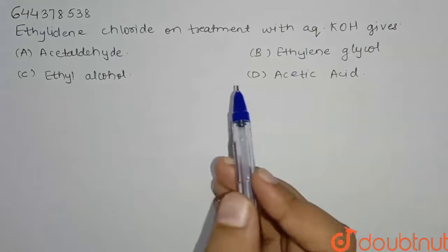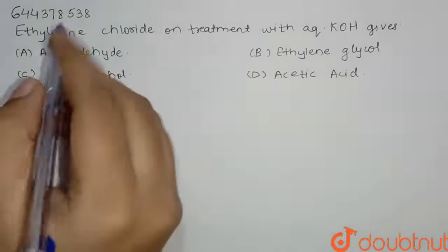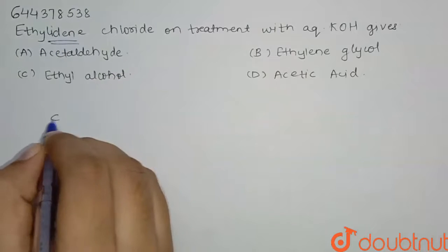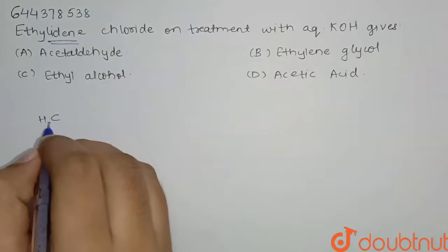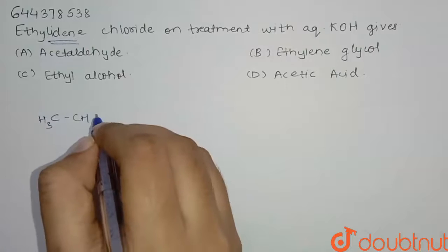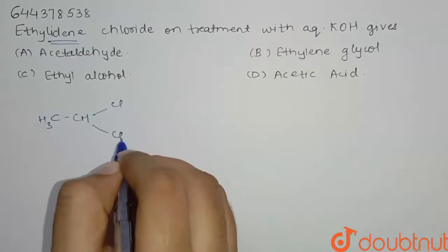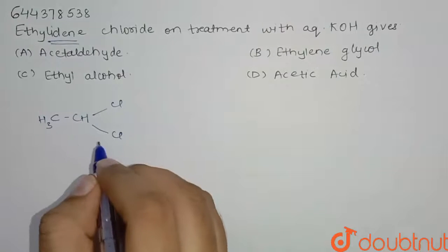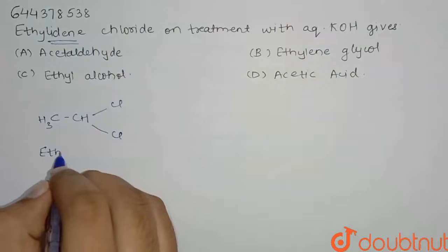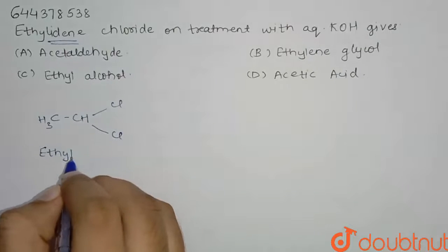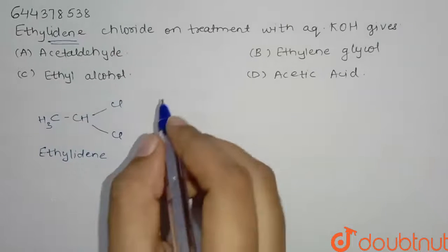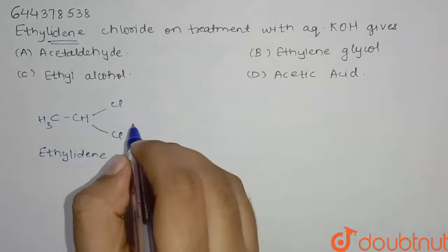Let us see the reaction and what will be the product. Here we will react ethylidene dichloride, that is CH₃CHCl₂ — this is ethylidene dichloride — and we have to react this with aqueous KOH.